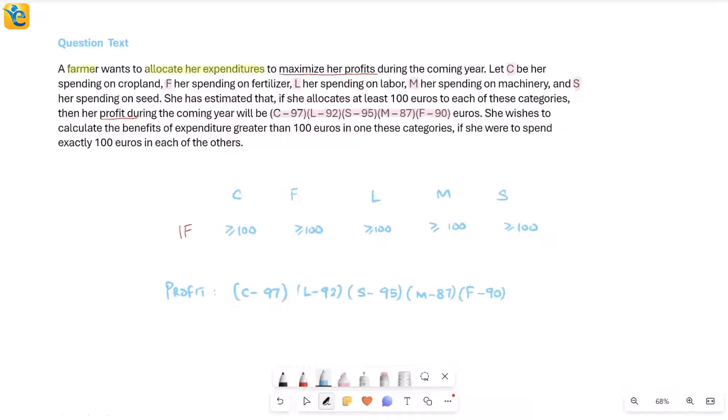This much we understand: if this happens, then this is the profit, and this is what she needs to maximize. Remember, that is her overall goal. How do I maximize by allocating my expenditures? How should I split this so that I can maximize my profit? And remember, this model for profit will only work if this condition is met. With that, let's read what the question is.